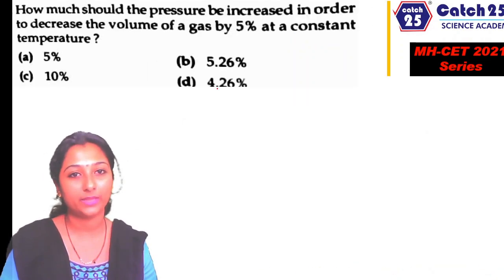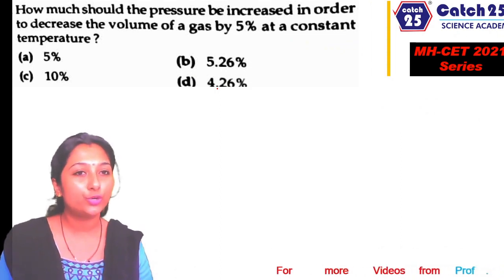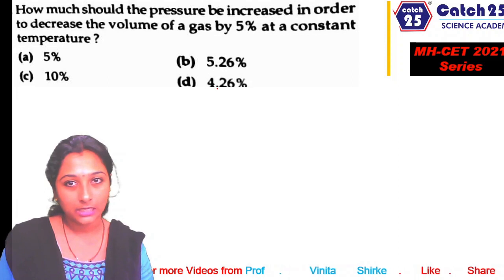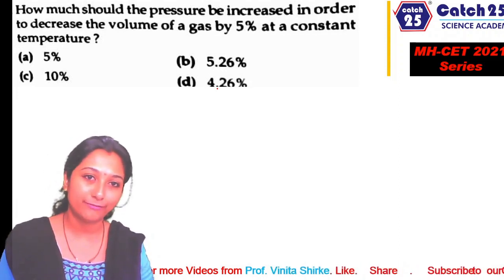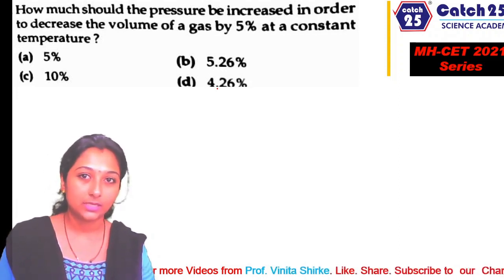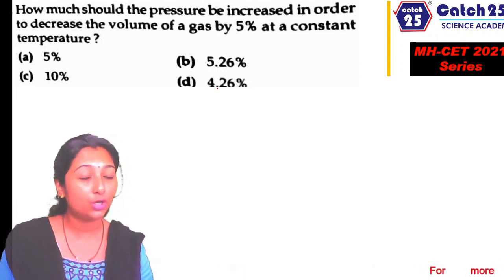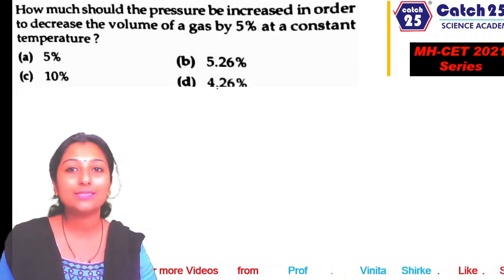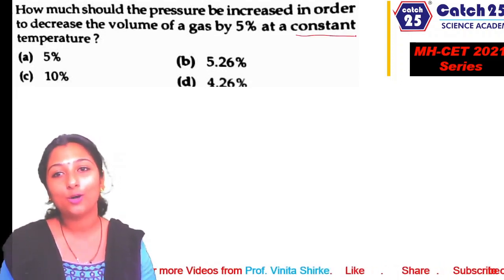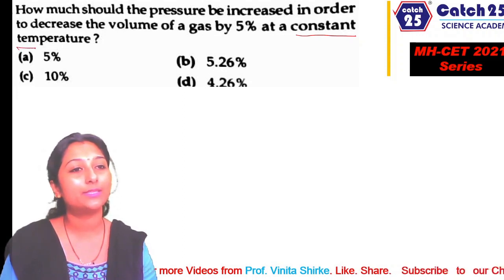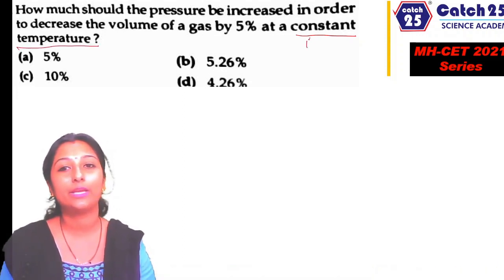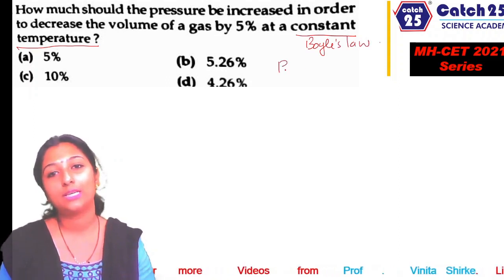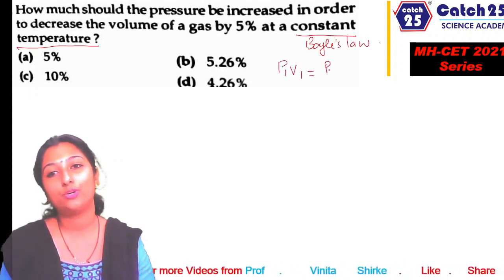Next question: How much should the pressure be increased in order to decrease the volume of a gas by 5% at constant temperature? Constant temperature means we use Boyle's law: P1·V1 = P2·V2.